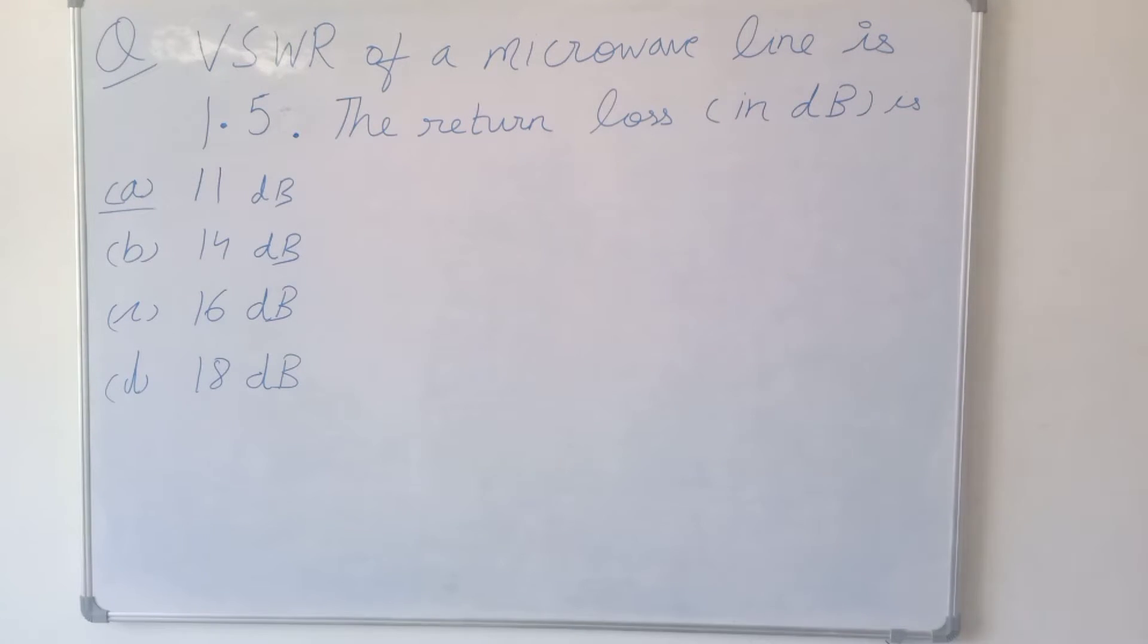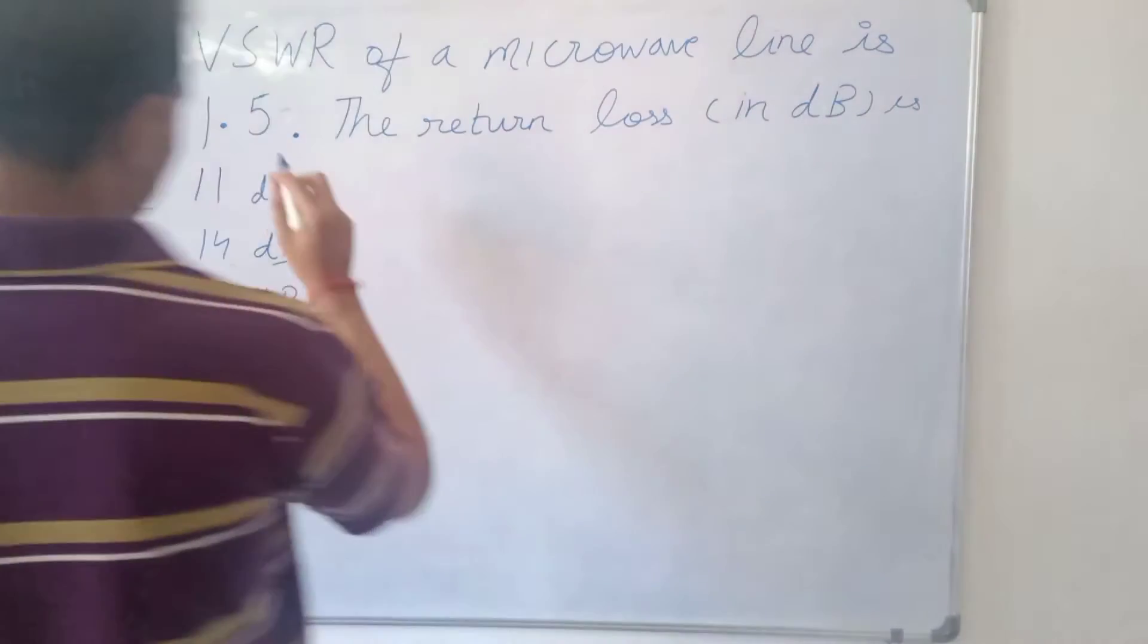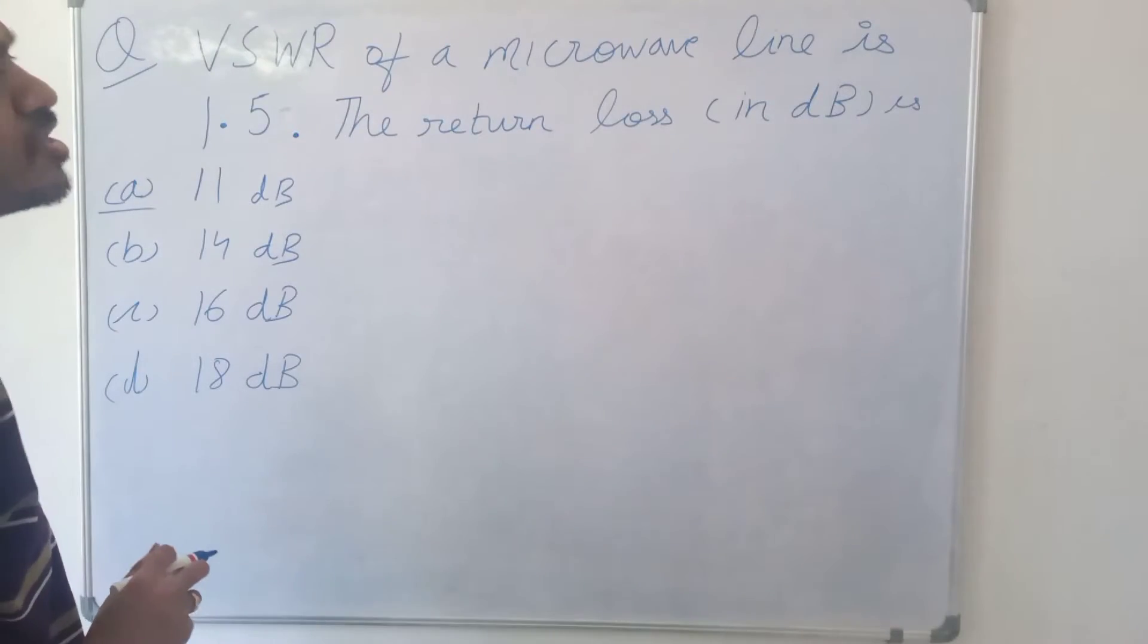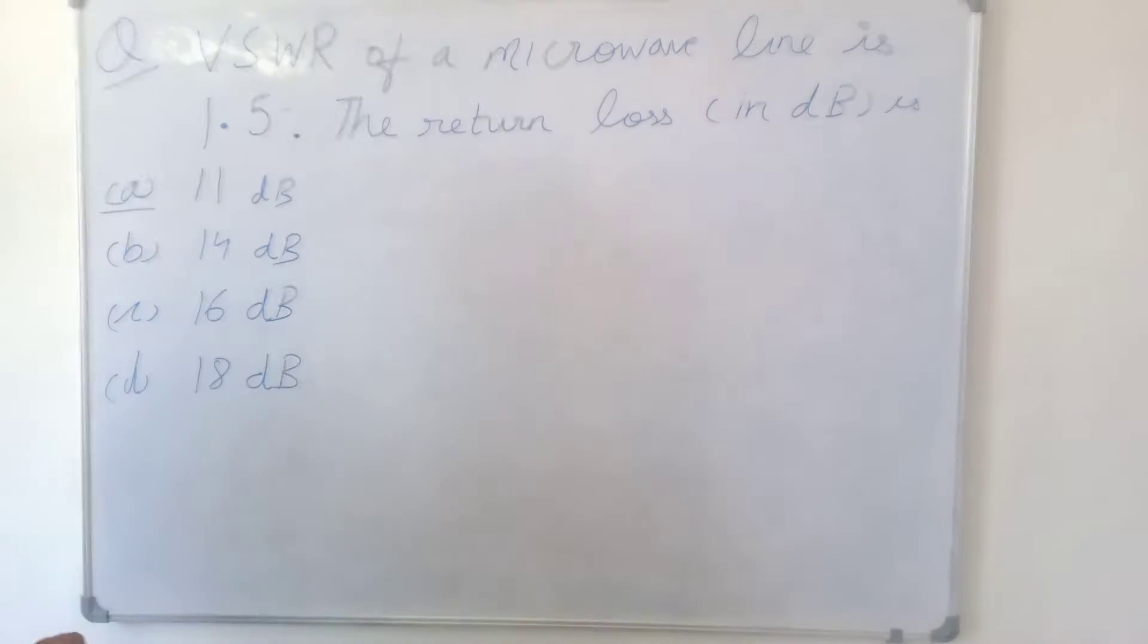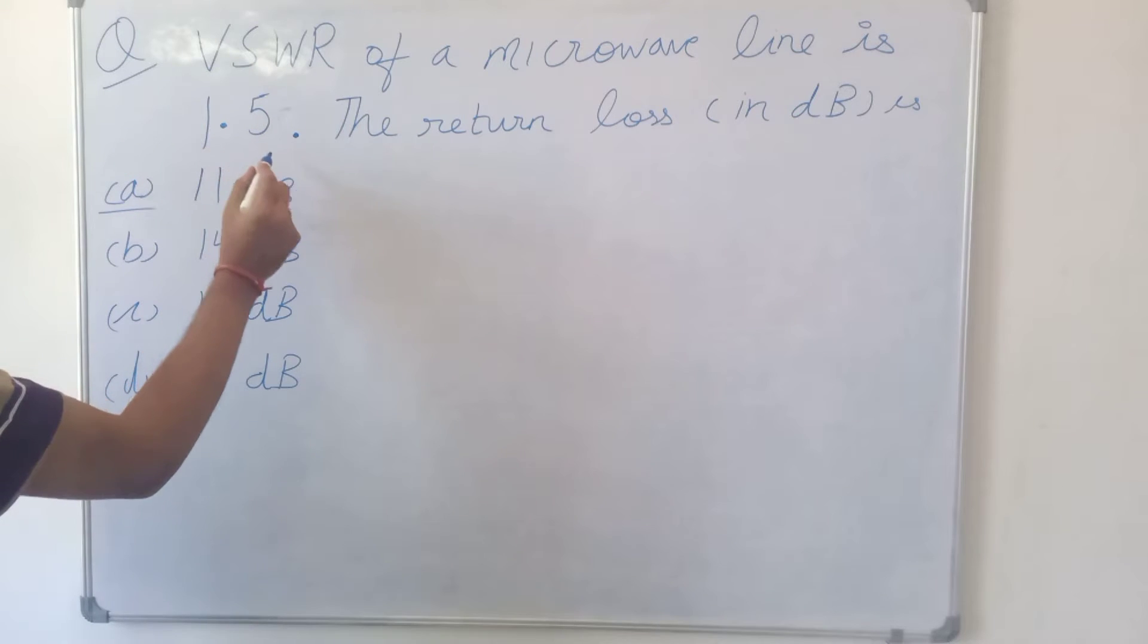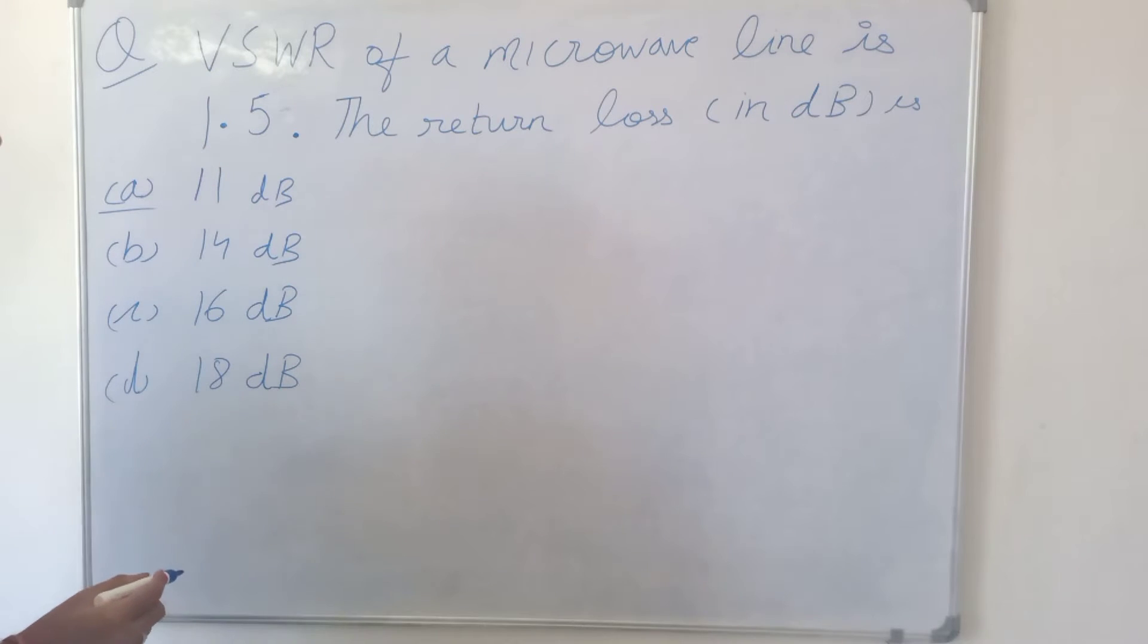In this question, we will calculate the return loss from the voltage standing wave ratio. It is given that VSWR is 1.5, and we have to calculate the return loss.